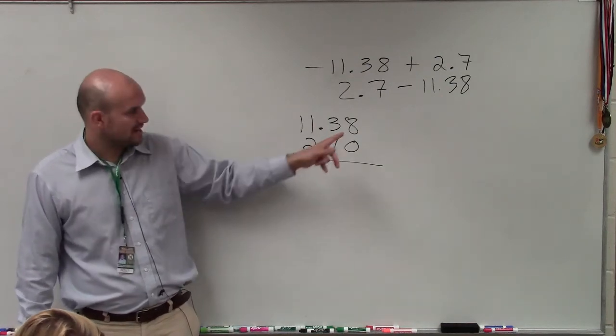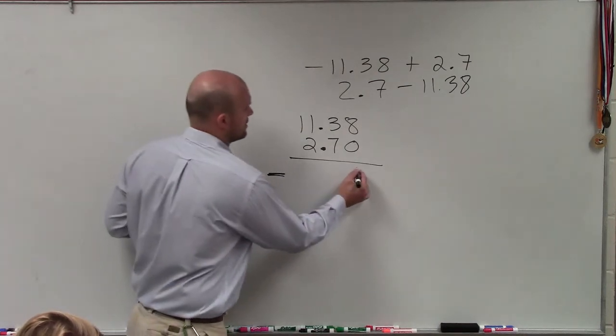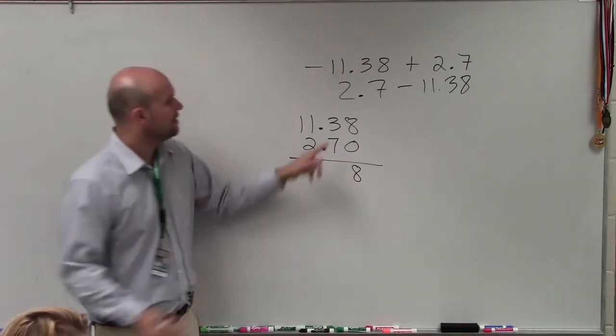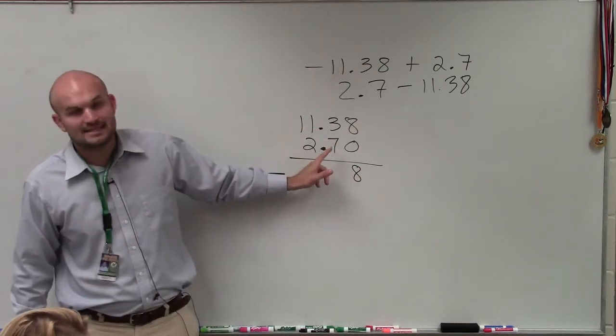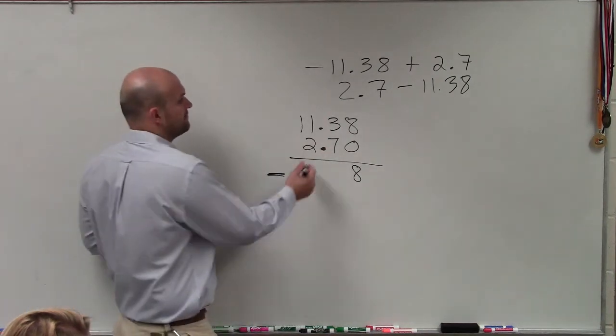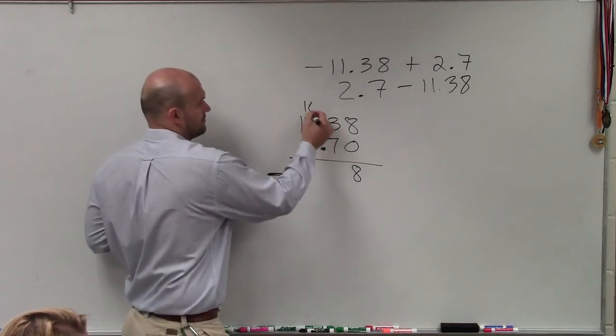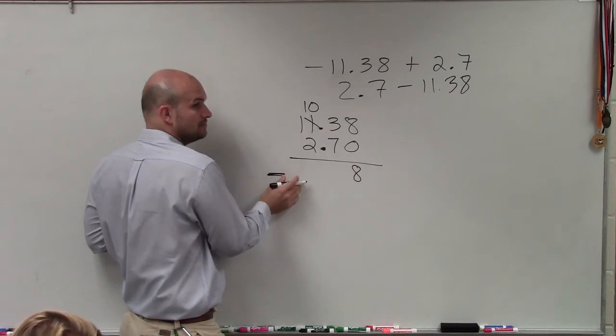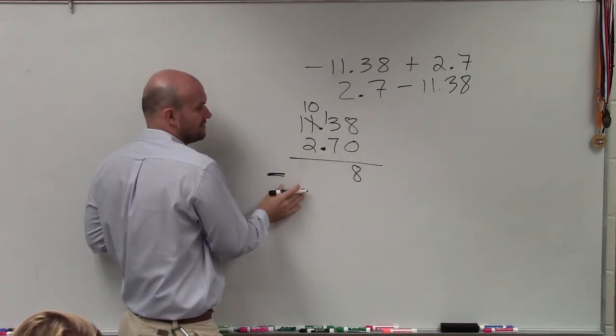So now we just go and subtract. 8 minus 0 is 8. 3 minus 7, I cannot subtract a 7. So therefore, I'm going to borrow, make that 13.